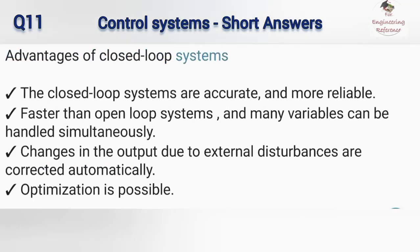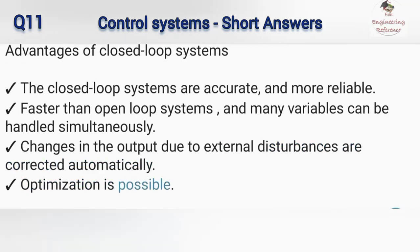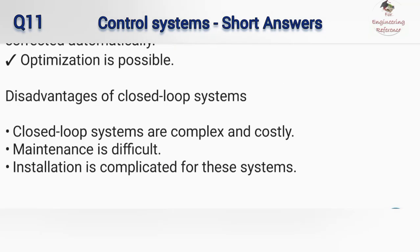Advantages of closed loop systems: closed loop systems are accurate and more reliable, faster than open loop systems, and many variables can be handled simultaneously. Changes in output due to external disturbances are corrected automatically, and optimization is possible. Disadvantages of closed loop systems: closed loop systems are complex and costly, maintenance is difficult, and installation is complicated.